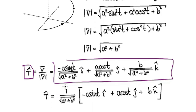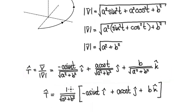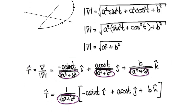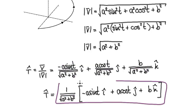Tidy this up by factoring. This term here is really a constant — constant, constant, constant. So you can factor the whole thing out. Our unit tangent is therefore given by this factored form.